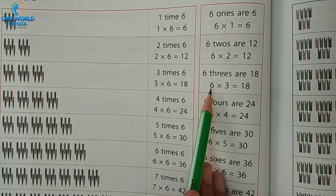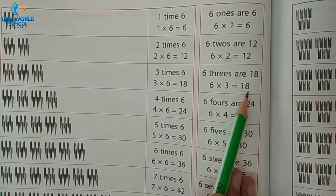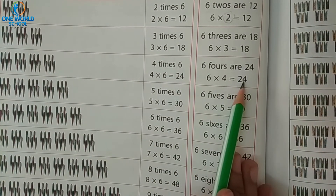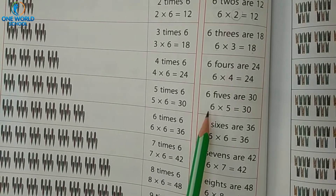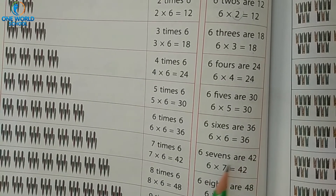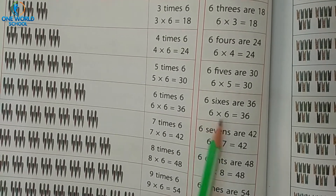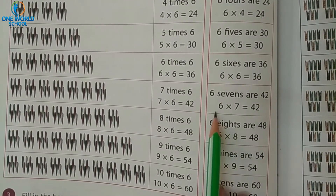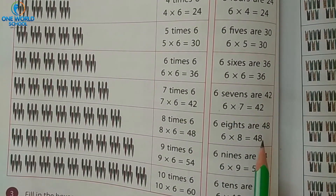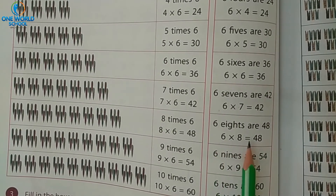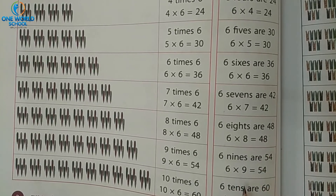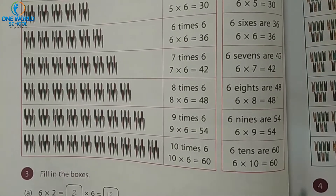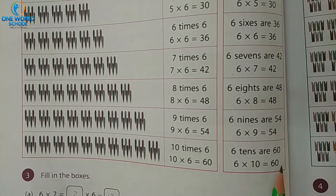Repeat with me: 6 twos are 18. Then 6 threes are 24. 6 fives are 30. 6 sixes are 36. 6 sevens are 42. 6 eights are 48. 6 nines are 54. And 6 tens are 60.